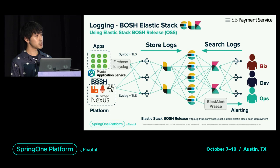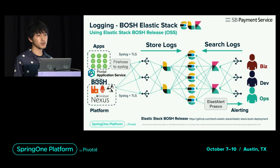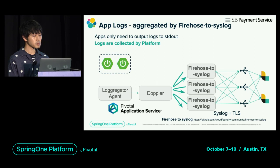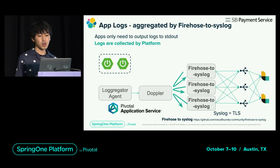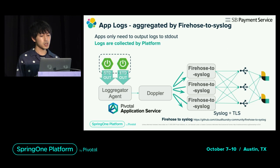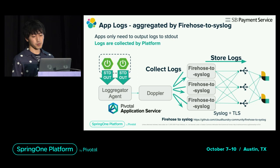Application logs are collected by an application called Firehose syslog. As a result, there is no need to consider the log destination in the apps — the platform automatically collects and stores the logs by simply outputting to standard out. Currently, we are considering migration from Firehose syslog to syslog drain for helping with scaling and splitting of output data.